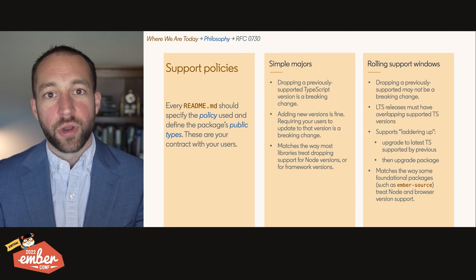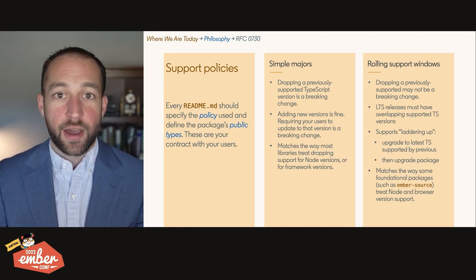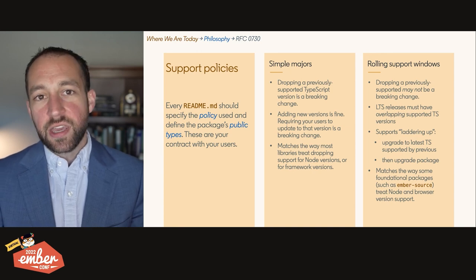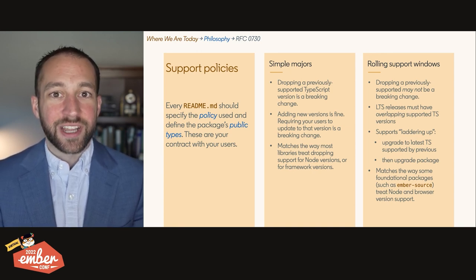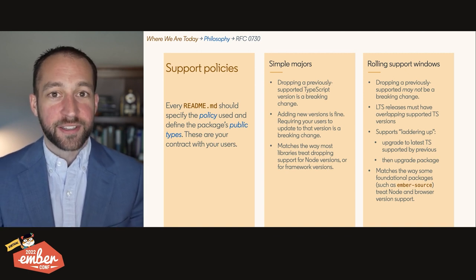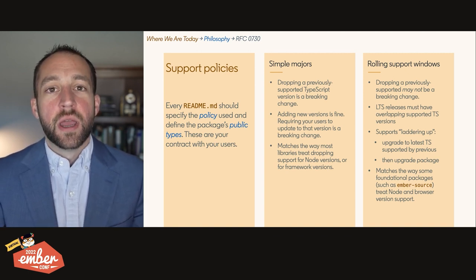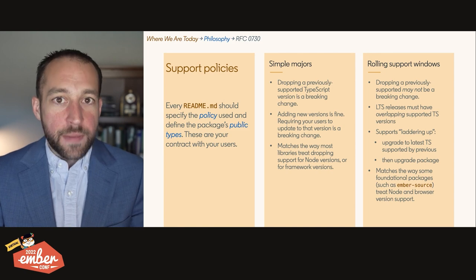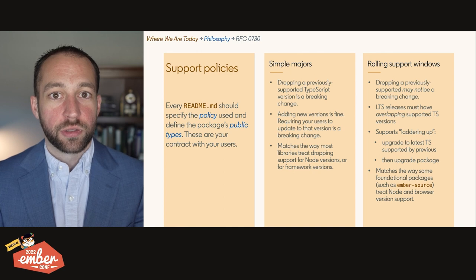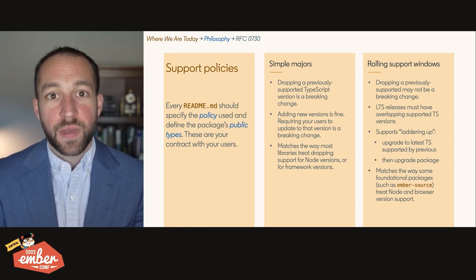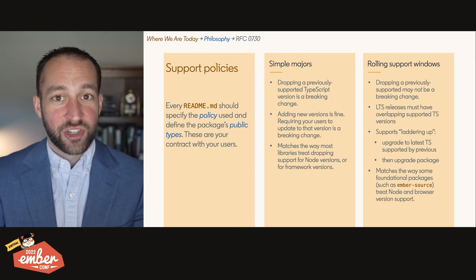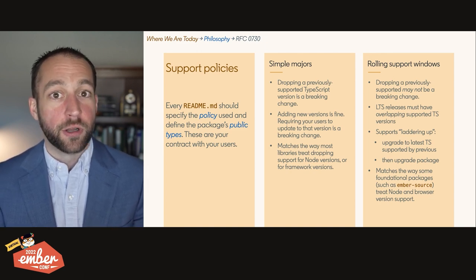This policy matches the way foundation-level ecosystem packages like Ember treat things like Node — when a Node LTS goes out of support, Ember drops support for it. The key here is that semantic versioning is a socio-technical contract. Whether your contract is simple majors or rolling support windows, you just have to keep it, and then people won't be broken by surprise. If you do them as we've suggested in this RFC, they won't be broken at all.